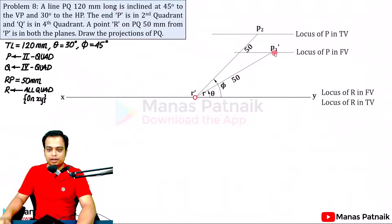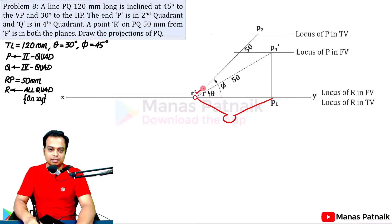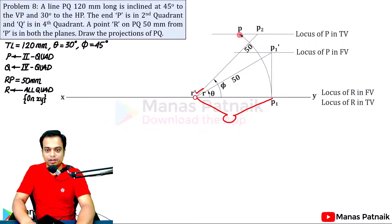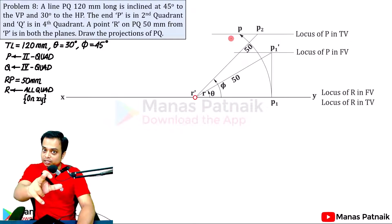Starting from P1 dash, project it downwards and mark it as P1. With RP1 as the radius and R as the center, rotate until you reach the locus of P in the top view — this gives the exact location of P in top view. To find P in the front view, you can project P1 downwards; it intersects the locus of P in the front view, and you mark it as P dash. That shortcut should be remembered.